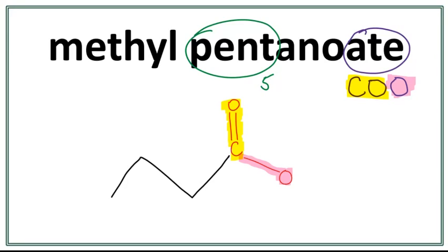So we count 1, 2, 3, 4. The carbon in the functional group is always the first carbon. This is our second carbon, third carbon, fourth carbon, and the fifth carbon.